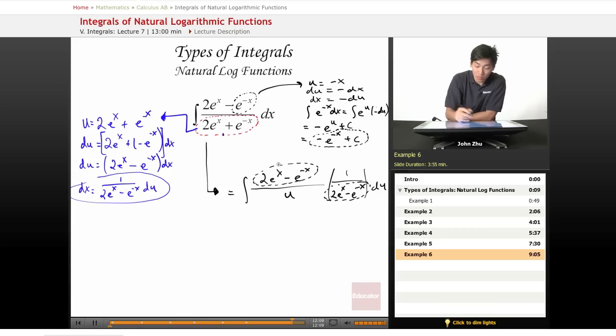Which leaves us with the integral of 1 over u du. So the integral of 1 over u du is just ln of u plus c. And then when we substitute the u back in with this expression, it's 2 e to the x plus e to the negative x plus c.